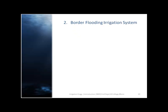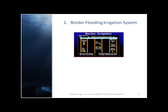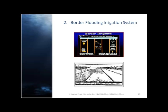The second method is border flooding. In this method, the land is divided into a number of strips separated by low levees called borders. The land area confined in each strip is of the order of 10 to 20 meters in width and 100 to 400 meters in length, as shown in the figure.